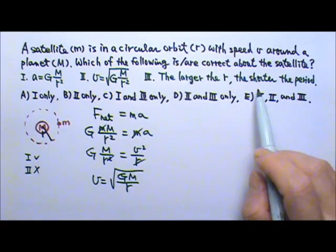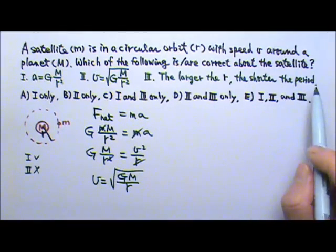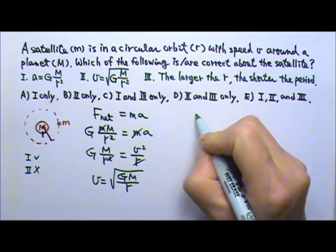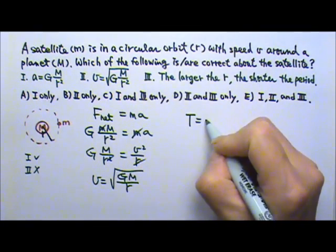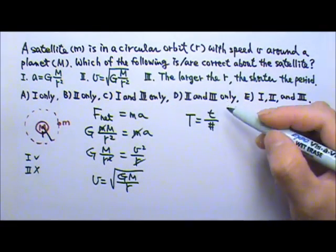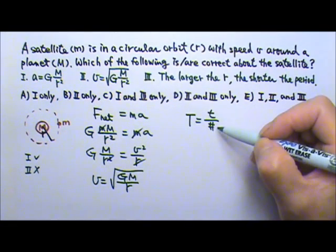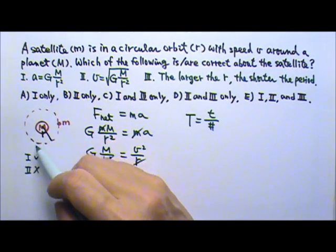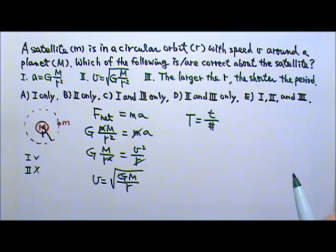Number 3, we need to know the information about the period, how the period relates to the radius. So we want the period. By definition, the period is the time per event, the time divided by the number of events. So the time it takes for this satellite to go around in one circle, that is the period.